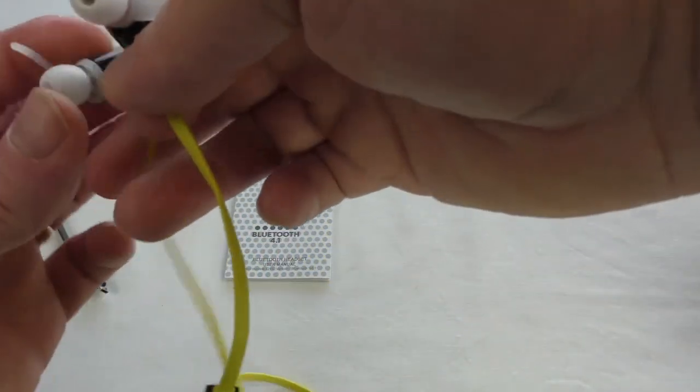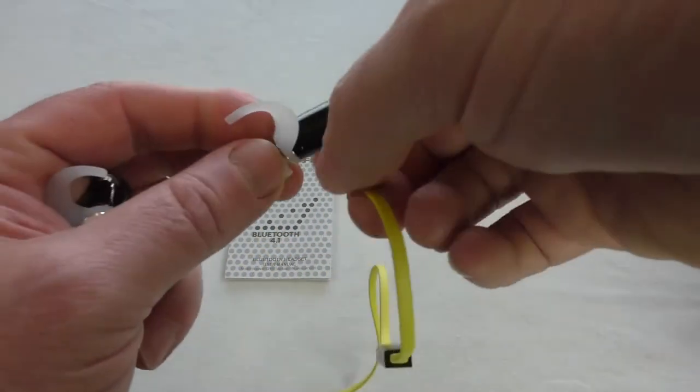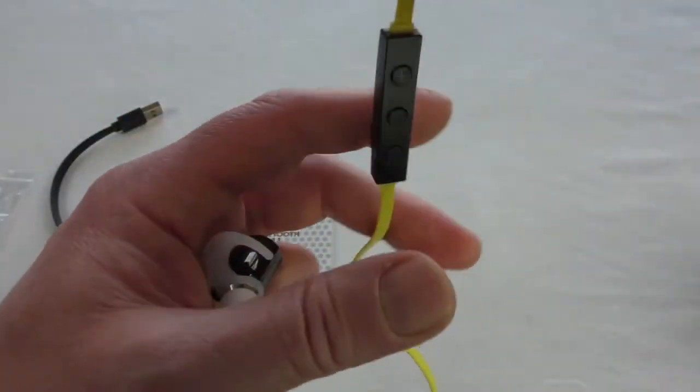So obviously right hand side, you've got your control unit on there and also there is a little light on there.